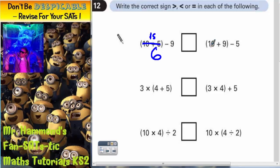Say this one. 10 plus 9 is 19. So that's the bracket done. 19 take away 5 is 14. So that one is 14.